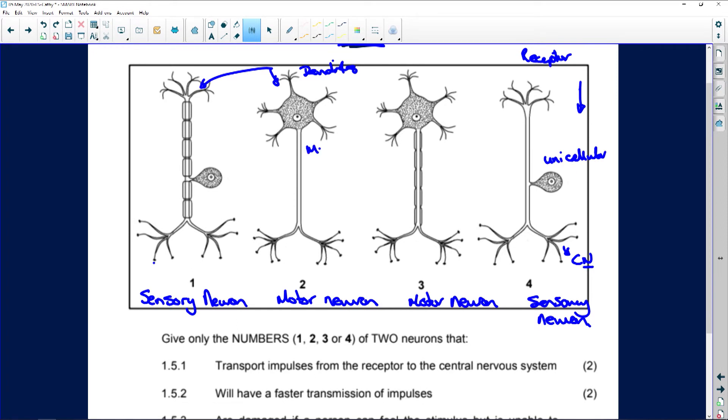Okay, and the impulse travels from the cell here and it then moves down to this bottom and this is where the effector will be.